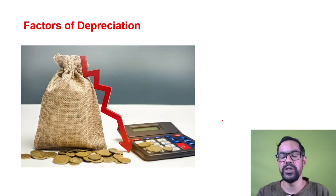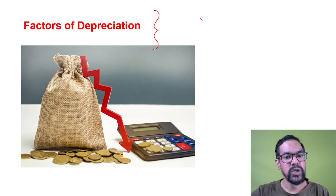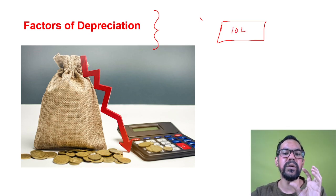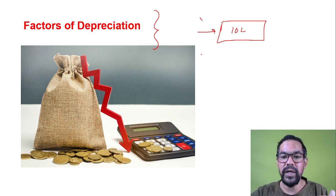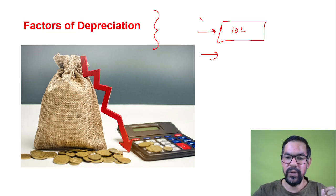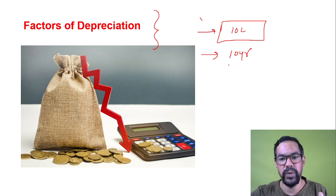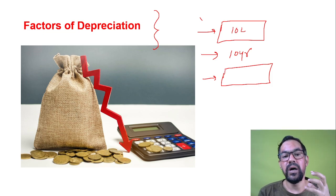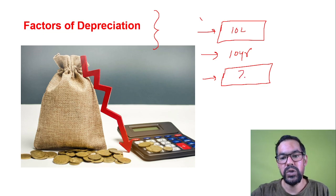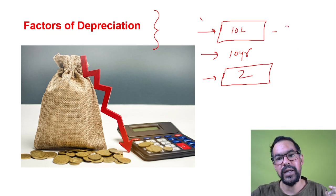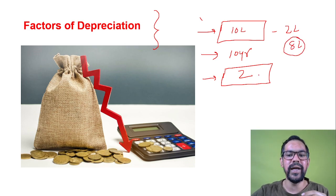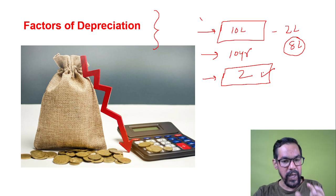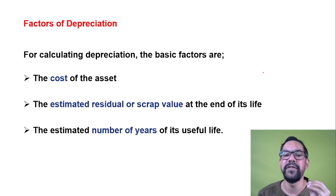The factors of depreciation: when you calculate depreciation for any asset, you need a few things. For example, for an XYZ machine bought at 10 lakh rupees, you need the purchase cost (10 lakh), the useful life (say 10 years), and the scrap value after 10 years (say 2 lakh). You then calculate depreciation on 8 lakh only — 10 lakh minus 2 lakh — because you will recover the scrap value at the end.